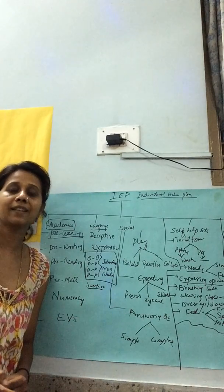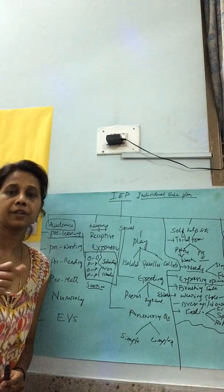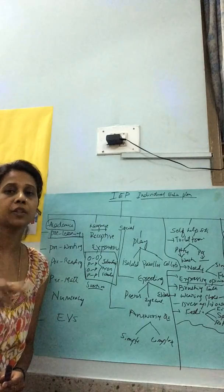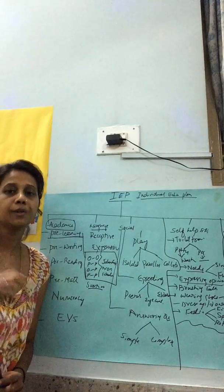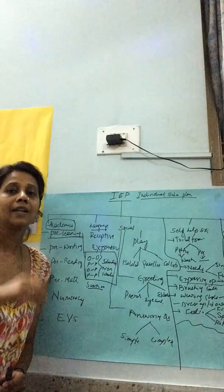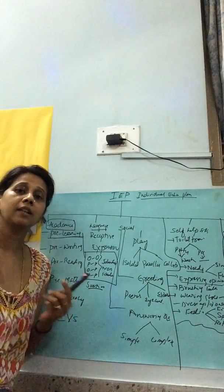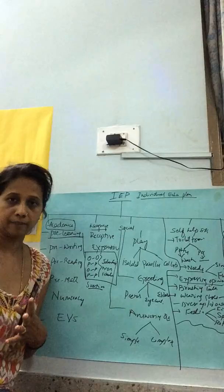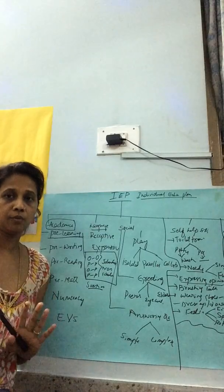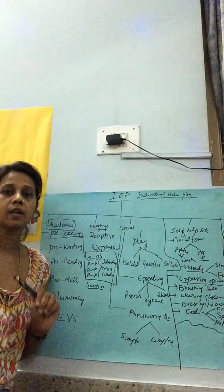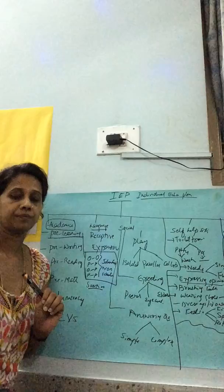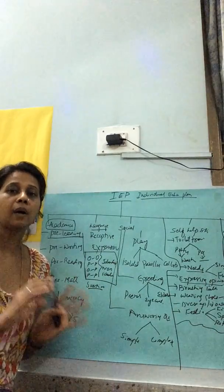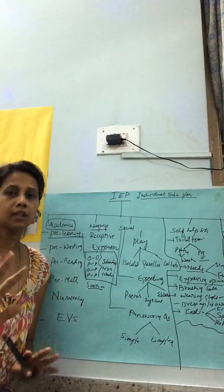Next comes sorting. We start with simple sorting — like chana dal and rajma, or mutter and rajma, or peanuts and rajma — only two variations to start with. Then we increase complexity as he's able to understand the concept. So for now, only two variables.